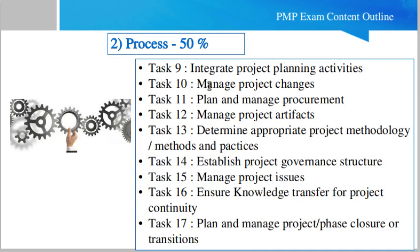Task 7: plan and manage the quality of products and deliverables. Task 8: plan and manage scope — scope means the boundary of the deliverables you are going to deliver. Task 9: integrate project planning activities. Task 10: manage project changes — any change not mentioned in the scope document should be considered a change request. Task 11: plan and manage procurement — what hardware and software you need to procure and purchase. Task 12: manage project artifacts such as source code, scope documents, and functional specifications.